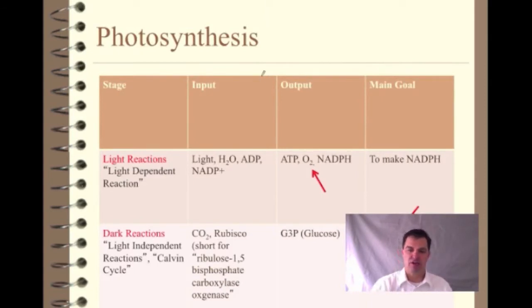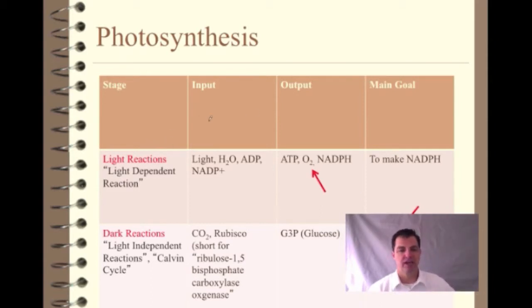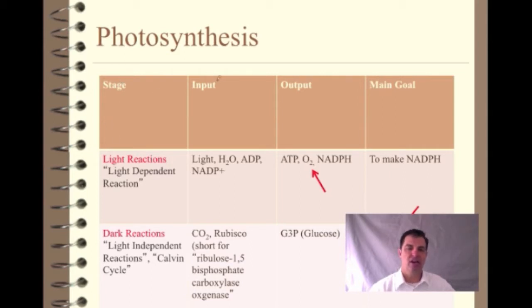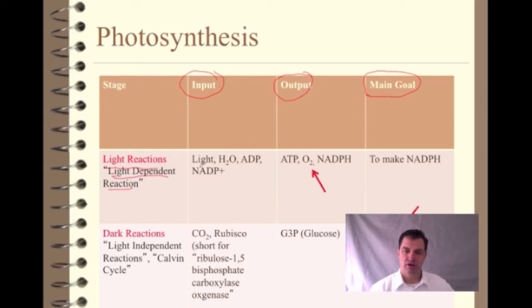Just like we did with cellular respiration, we're going to break down photosynthesis and walk through all the steps. For our non-majors bio class, what we want to be able to do is break this down and keep track of what goes in and what comes out and what the main goal is — what did we accomplish? So we'll talk about the light reactions, also called the light dependent reactions, and we'll talk about what goes in, what comes out, and what our main goal is.